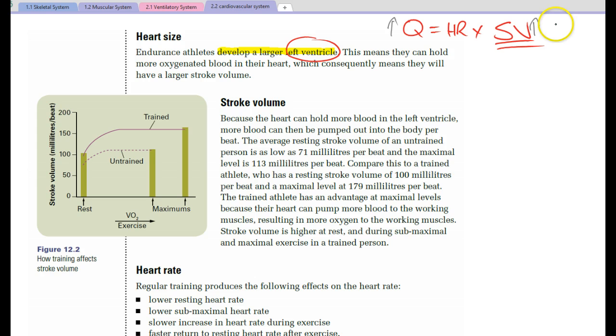But stroke volume has increased, therefore, to maintain our cardiac output, heart rate can decrease. That's why at rest or sub-maximal activity, our heart rate will be less than what it was before training.